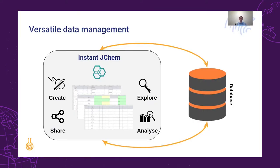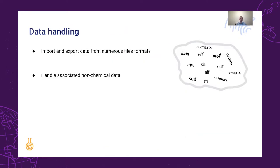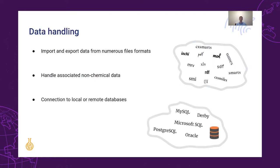InstantJCAM is a versatile chemistry desktop application designed to support a range of different chemical discovery workflows. It allows scientists to capture and analyze chemical and biological data, build and manage their own relational data models, and run powerful searches for information-rich data visualization on any operating system. For data handling, IGC can import and export numerous file formats and handle compound-associated non-chemical data. It can also make use of local or remote databases or even chemical cartridges, such as ChemAxon Coral or PostgreSQL cartridge.